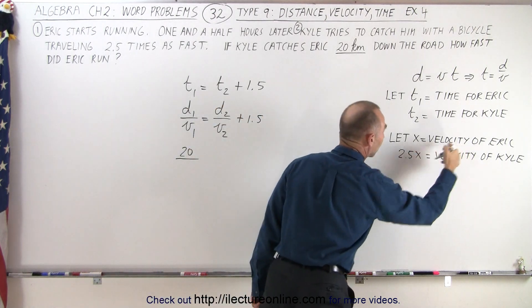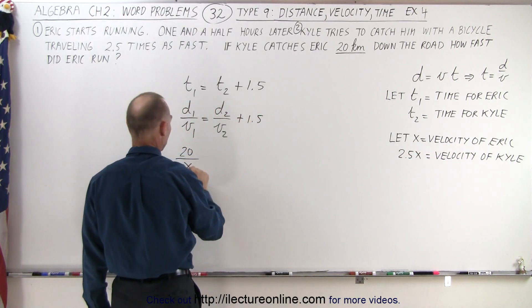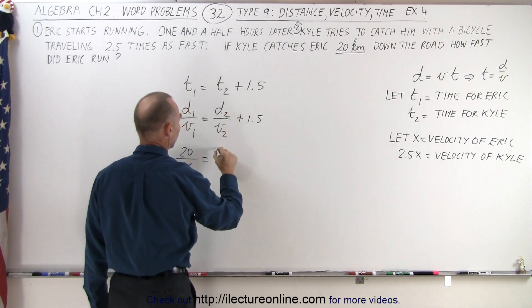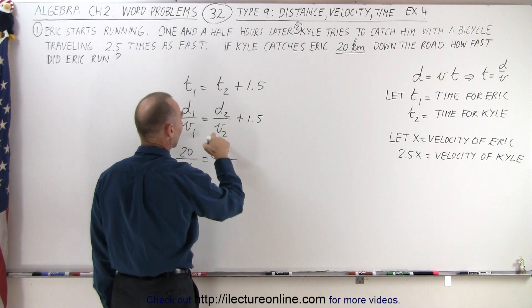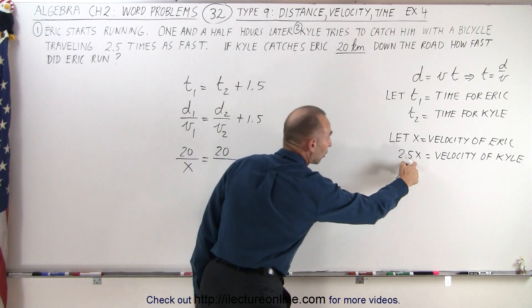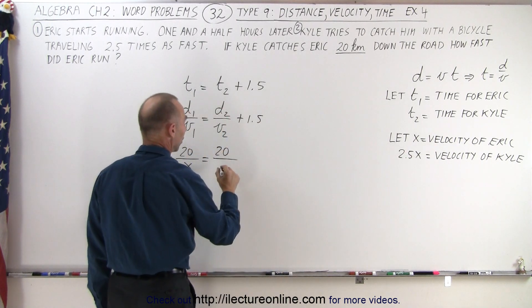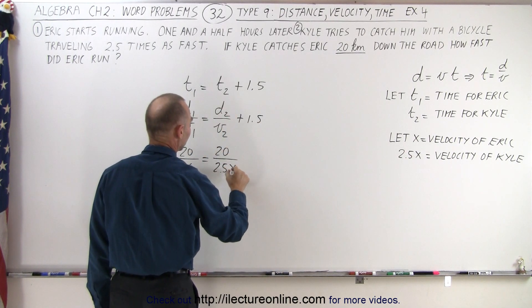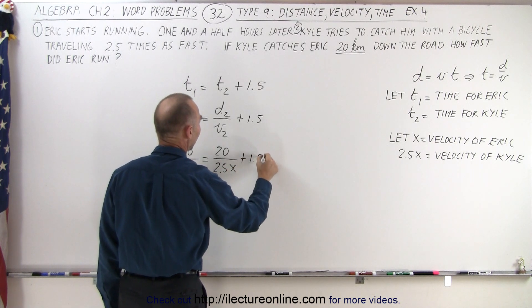Velocity one is the velocity for Eric, which is going to be x. That is equal to distance two, which is still 20 kilometers, divided by velocity two, which is going to be the velocity for Kyle, or 2.5x, plus 1.5.